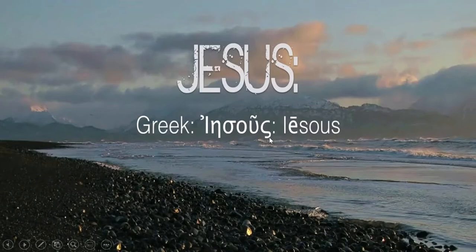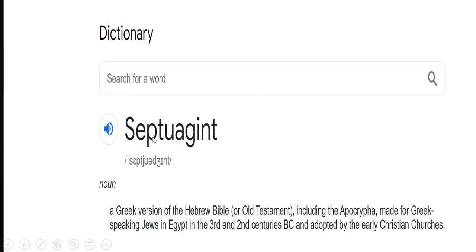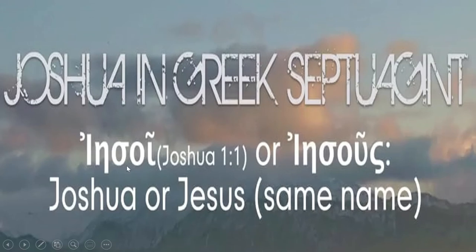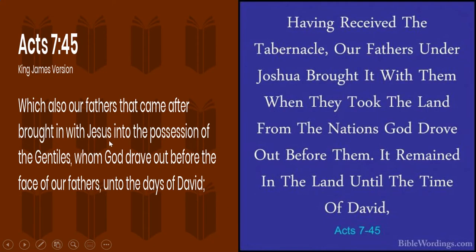Now let's turn to the Septuagint. The Septuagint is the Greek form of the Old Testament. If you look in the Septuagint at the name Joshua, the Greek word is the same as Jesus — the very same thing. The same word they have in Greek for Jesus is the same word they have for Joshua. You must ask yourself: is that an error, or was it willfully done? It was willfully done, because in some scriptures they would write Jesus and in some scriptures they would write Joshua.